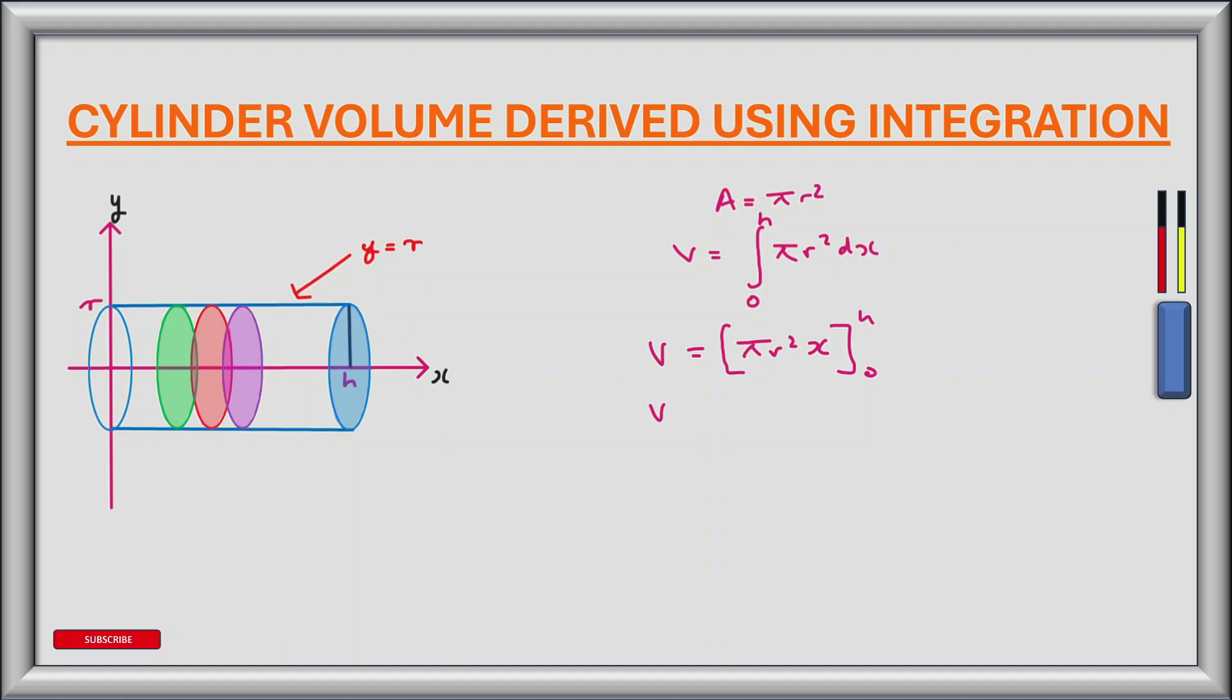So the volume of the cylinder is equal to π r squared h minus π r squared times 0, which gives us the volume equal to π r squared h.